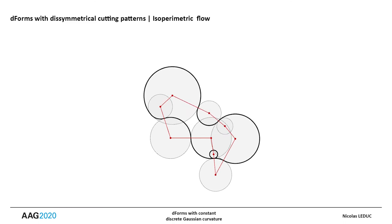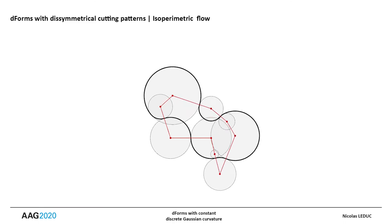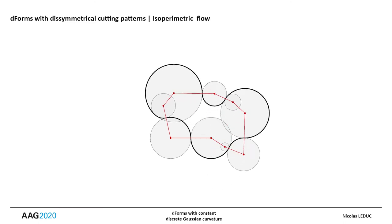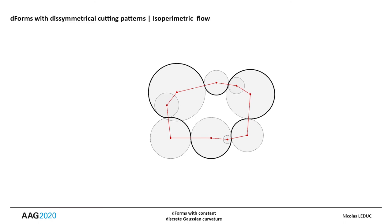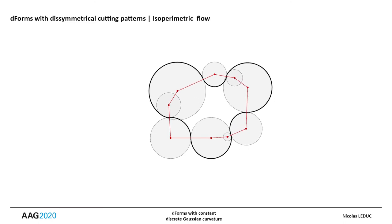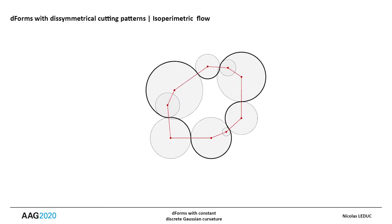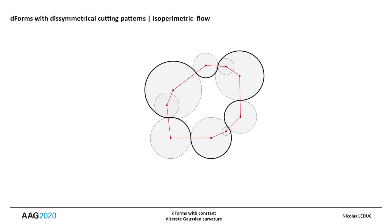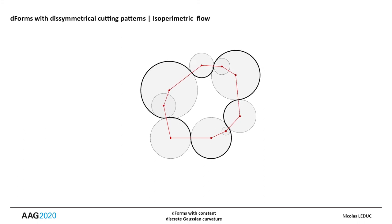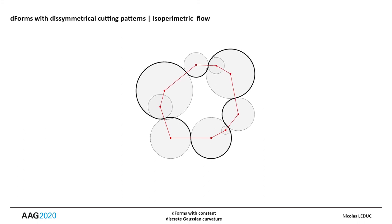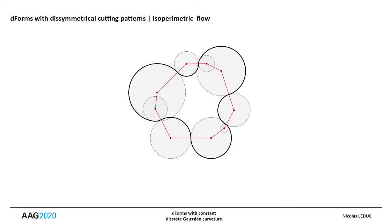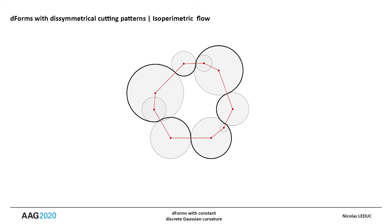To go further and explore a whole family of solutions, the idea is to apply a geometric flow to this initial solution. This flow should satisfy, over time, both the constant Gaussian curvature constraint and the closure conditions of the two cutting patterns. This flow is isoperimetric and is applied to the polygonal evolute of the curve of the first cutting pattern.